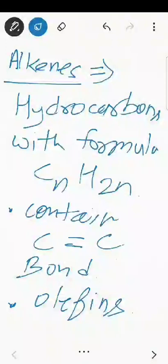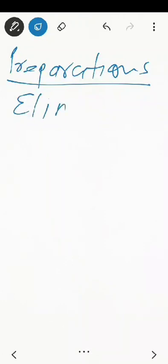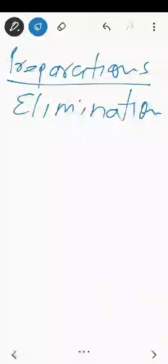Alkenes are generally prepared by the elimination reaction. In elimination reactions, groups or atoms from the adjacent carbon atoms get eliminated, and a carbon-carbon double bond is formed due to the elimination of these groups or atoms.